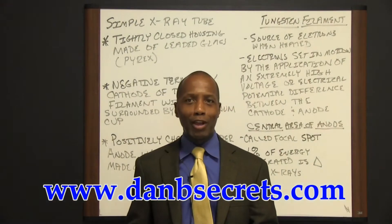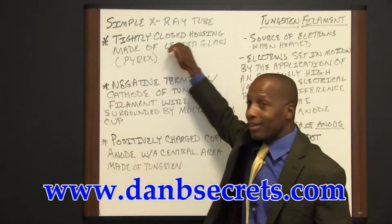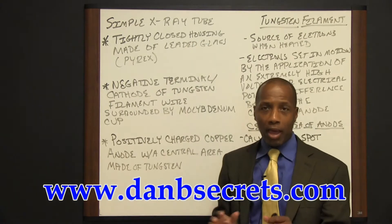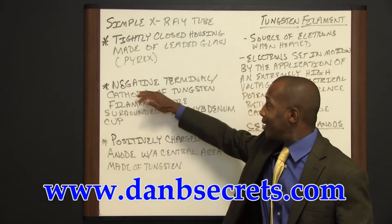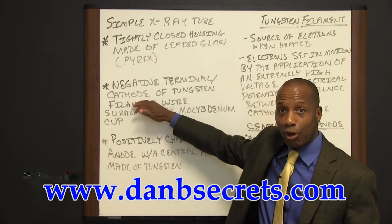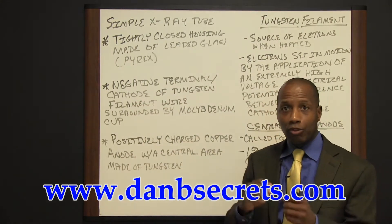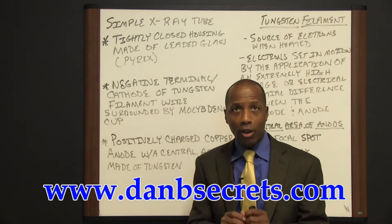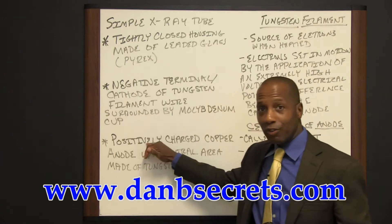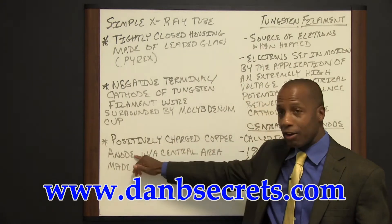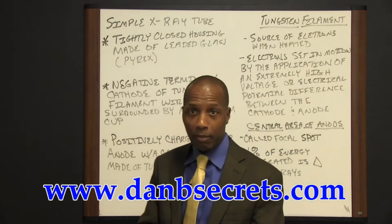A simple x-ray tube consists of the following: a tightly closed housing made of leaded glass, usually pyrex; a negative terminal or cathode of tungsten filament wire surrounded by what we call a molybdenum cup; and a positively charged copper anode with a central area made of tungsten.